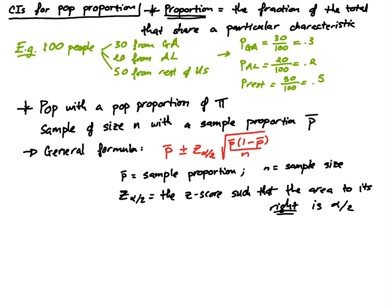We have a sample that we can use to calculate the sample proportion and the sample size, so all we have to do to find the confidence interval is to plug those numbers into this formula and find the answer.